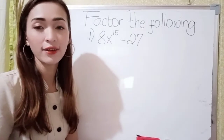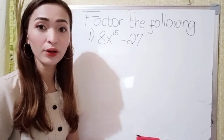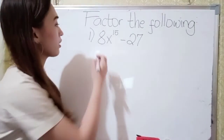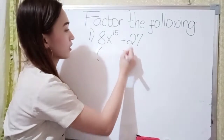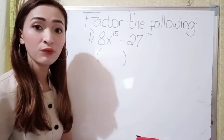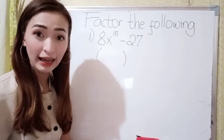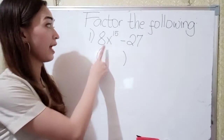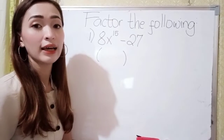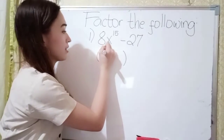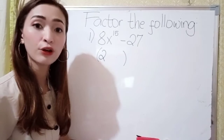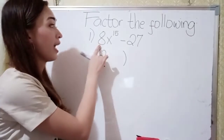For number one, we have 8x to the 15th power minus 27. First, what you're going to do is think of a number that if you multiply by itself thrice, the answer is 8. So, what is the cube root of 8? The cube root of 8 is 2, because 2 times 2 is 4, times 2 is 8.